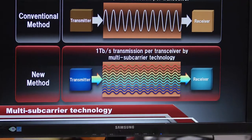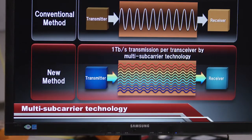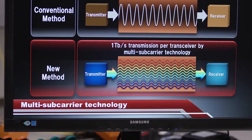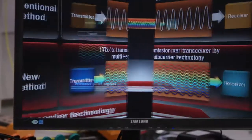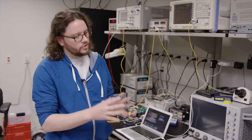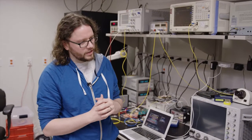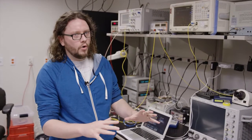So the way that we square this circle is that we use several, in this case 11, very closely spaced carriers and we modulate them with almost no gap between the channels, so very spectrally efficient. And then we can detect all 11 of these sub-carriers in one go at the receiver and then jointly process them with one set of algorithms.